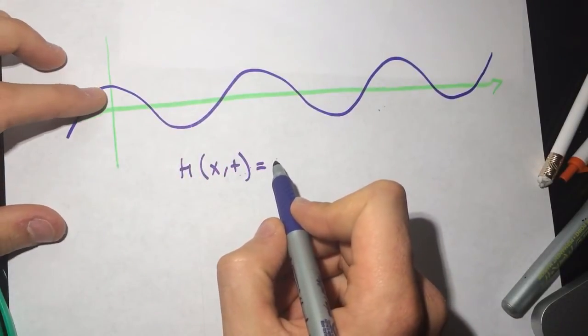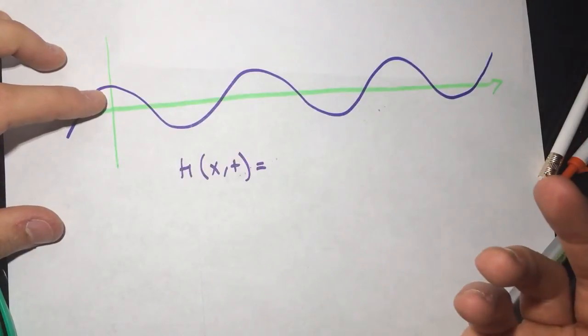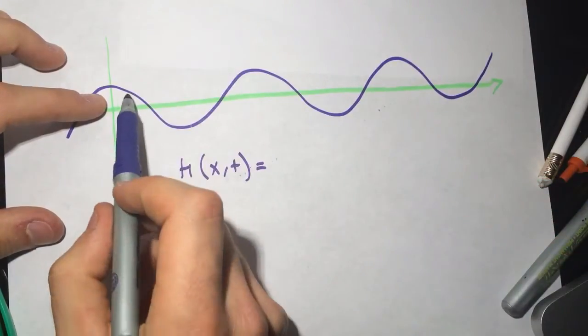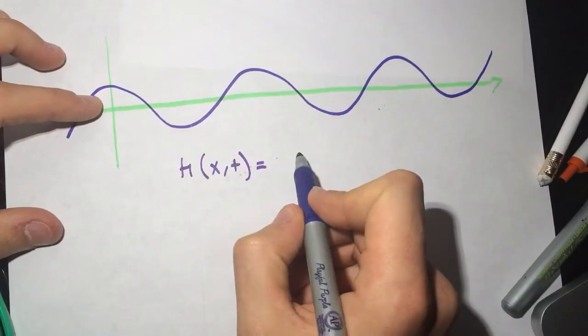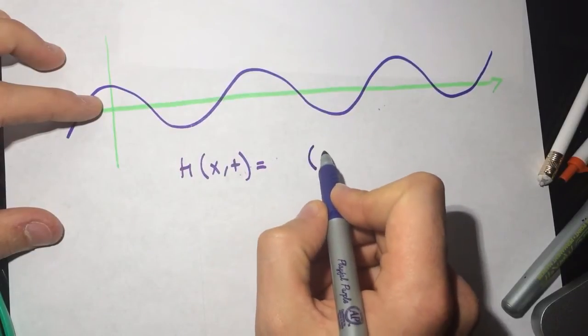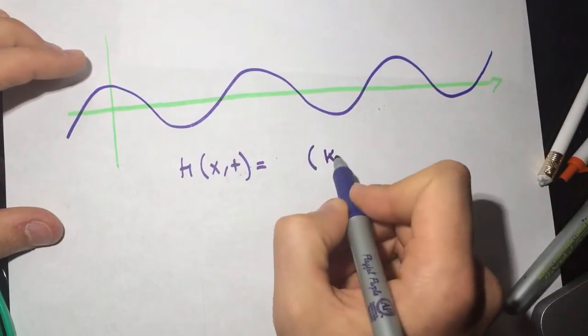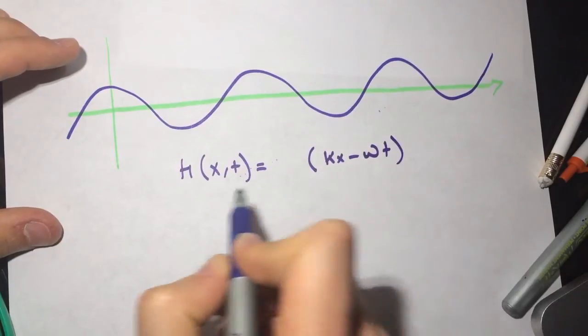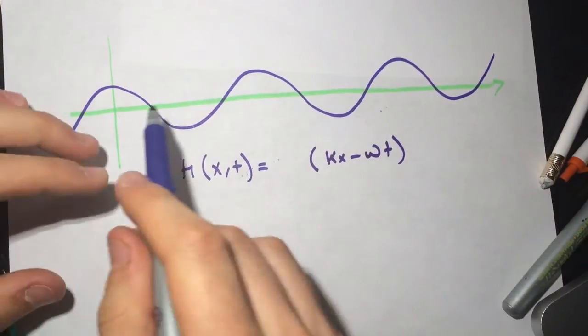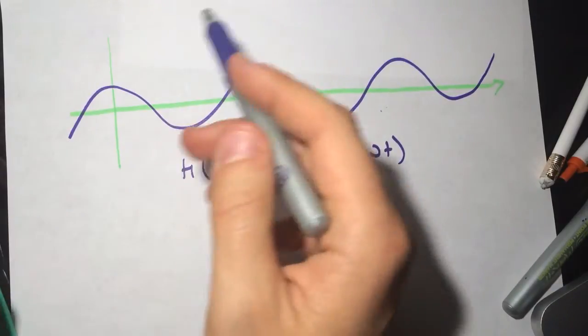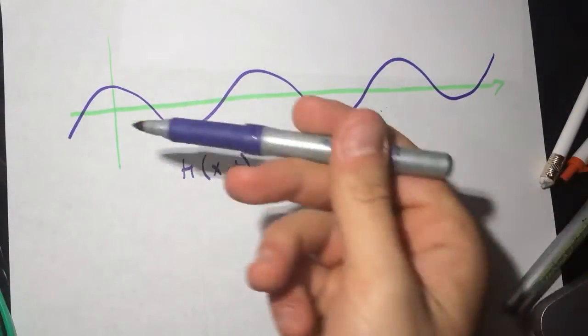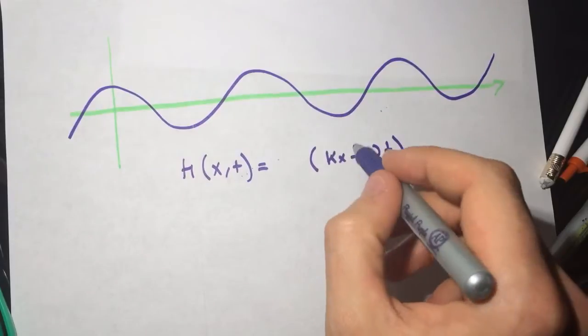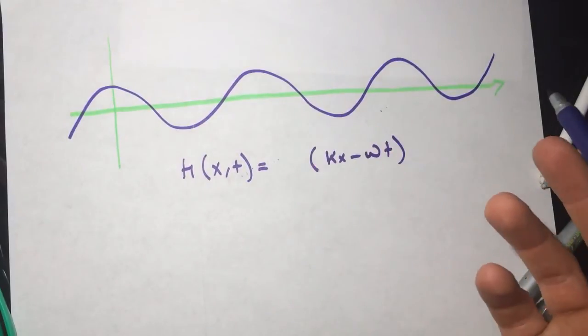So what would I choose here? Would I choose the cosine or would I choose the sine? The inside of this will be k and then x minus omega t. And I chose the minus because it's going this way. If it's going backward, then this is gonna be plus. So it's going in the positive direction.